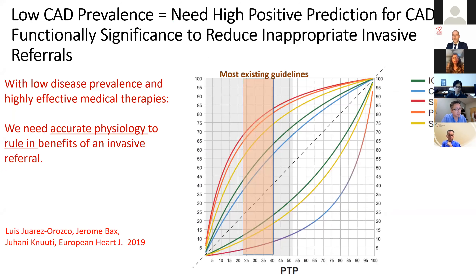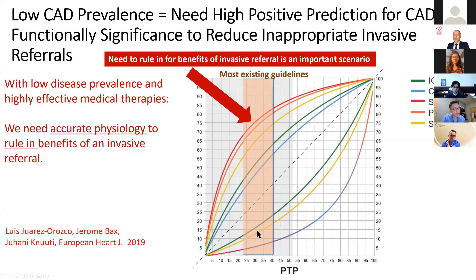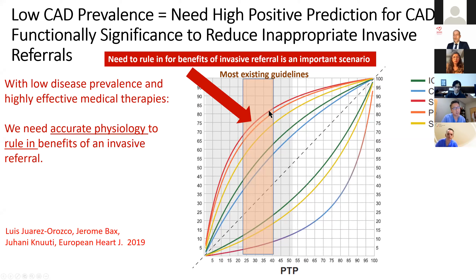In a large meta-analysis, the ability of a test to rule out disease is fairly good across anatomic, PET, and MRI approaches. But in the current era of low disease prevalence and highly effective medical therapy, pre-test likelihood is somewhat lower than the 50% range. The need to rule in the benefits of invasive referral — ensuring the patient's symptoms will truly benefit from revascularization — should be assessed non-invasively. This meta-analysis showed that CMR performed really well compared to other modalities in accurately assessing coronary physiology to rule in the benefits of invasive referral.